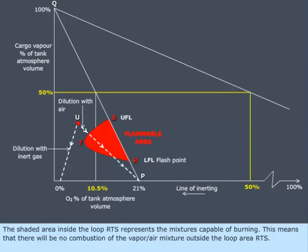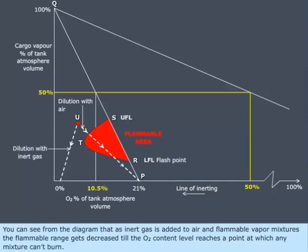The shaded area inside the loop RTS represents the mixtures capable of burning. This means that there will be no combustion of the vapor-air mixture outside the loop area RTS. As inert gas is added to air and flammable vapor mixtures, the flammable range decreases until the O2 content level reaches a point at which any mixture cannot burn.